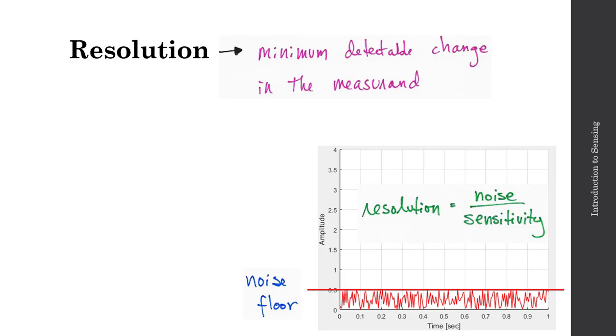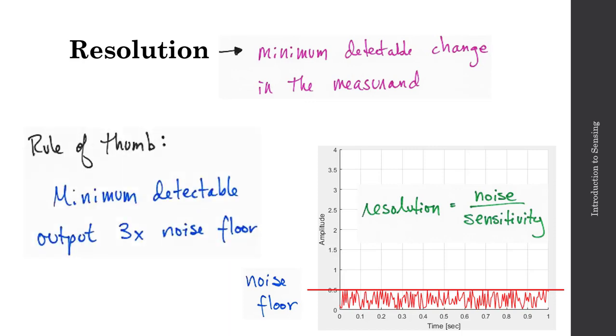And so we can define resolution as the ratio of this noise divided by the sensitivity. And what we see here is that noise is in output units, and sensitivity is the ratio of that output over input. So those output units cancel, and the resolution will be in units of the input. A good rule of thumb to use in terms of the resolution of a sensor is that the minimum detectable output is typically about three times the noise floor.